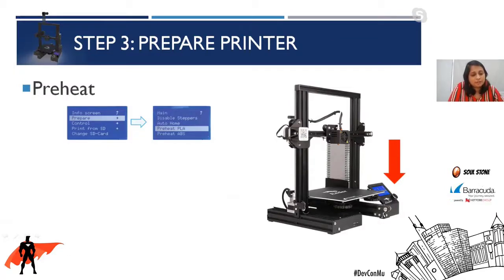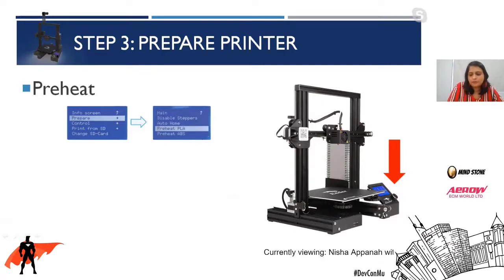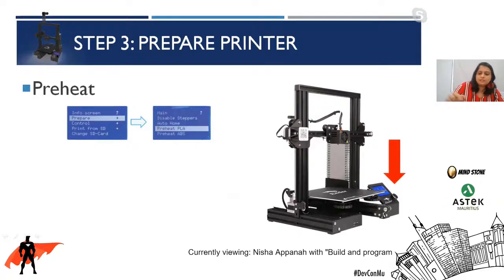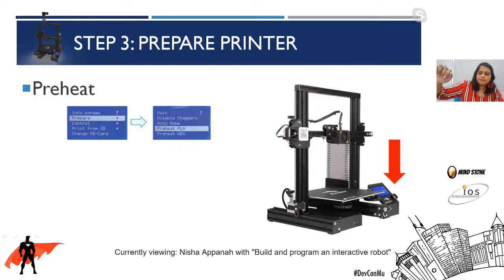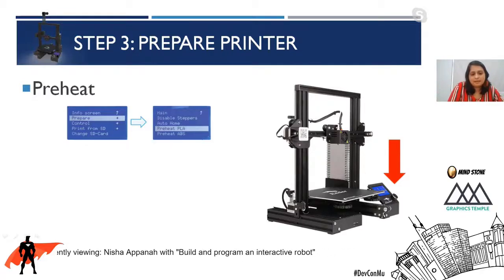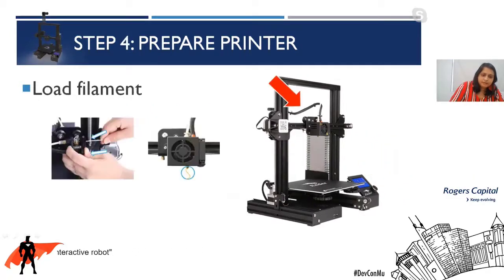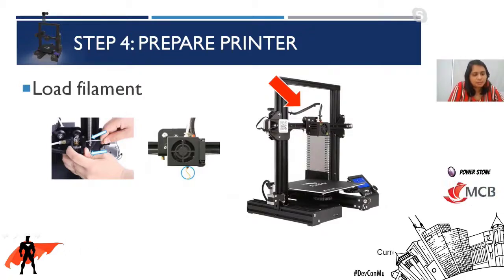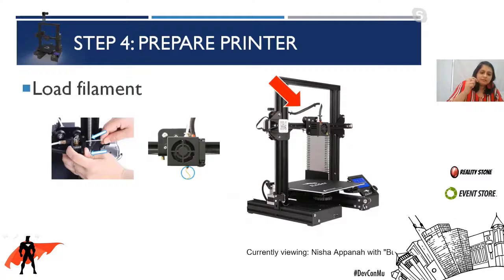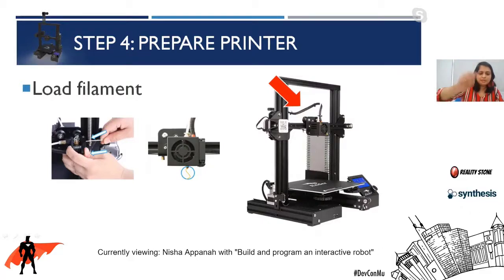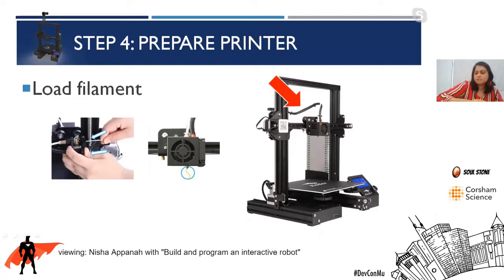After you save the G-code, you have to go ahead and prepare your printer. You click on the little knob at the bottom, select Prepare, then preheat PLA — PLA is your filament. You can use other types of filaments as well. After you preheat the filament you have to load it in — next to the extruder you press the knob and push the filament in as far as you can. At the bottom of the nozzle you'll see the melted filament coming down — that's when you know you've pushed it far enough.